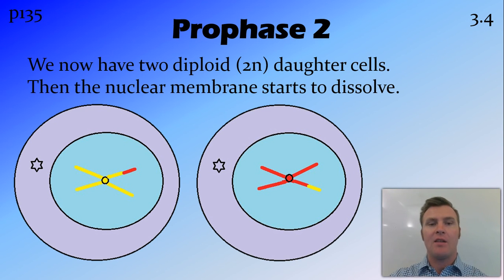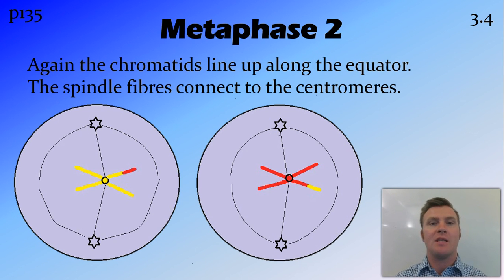And once again, the nuclear membrane starts to dissolve. The chromatids line up along the equator. The centrioles move to the poles. The spindle fibres connect to the centromeres from the centrioles.